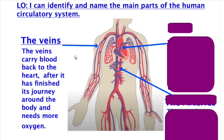We're going to take a look at this diagram here. First of all, we have the veins. The veins carry blood back to the heart after it has finished its journey around the body and it needs more oxygen.